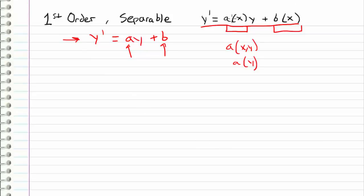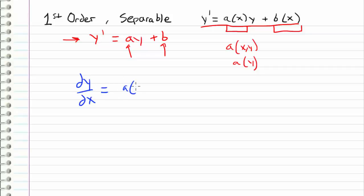They could be anything — this function could be x squared, it can be e to the x, it can be sine of x. So there's no way that we can derive a general form to a solution. So in the case that we have a differential equation of this form, dy/dx is equal to a function of x times y plus another function of x.